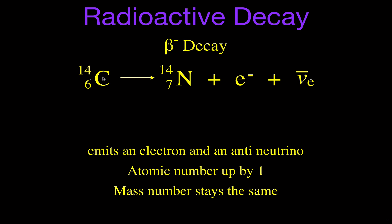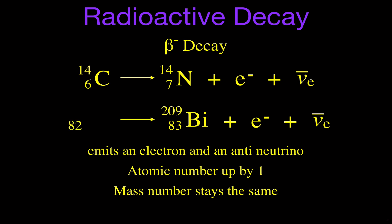Going in the other direction: if the daughter material is bismuth-209, we started with element 82 and the same mass number 209, and 82 is lead. So lead-209 undergoes beta minus decay to become bismuth-209. Mass number stays the same, atomic number goes up by one, and we have an electron and an anti-neutrino.